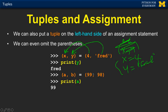This could be an expression or even a function that returns a tuple, and you can then assign it into two variables at the same time.